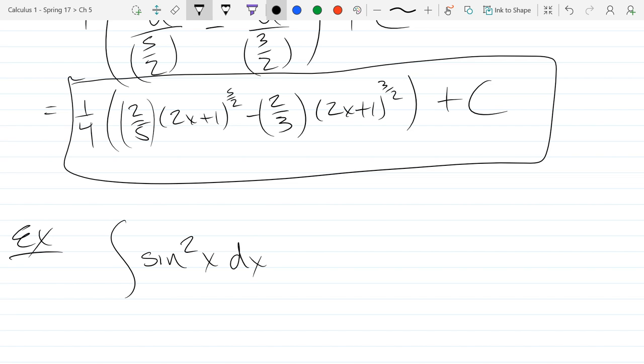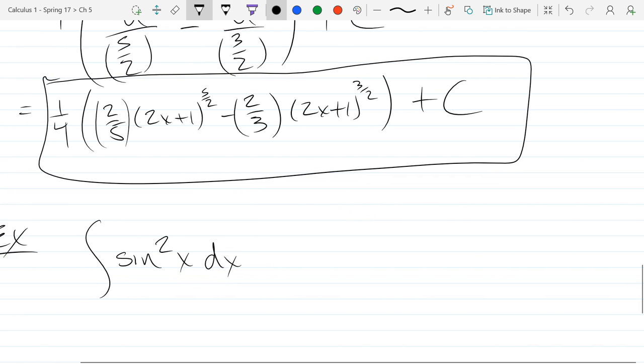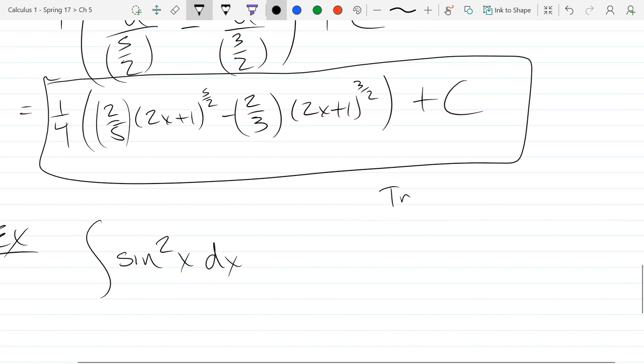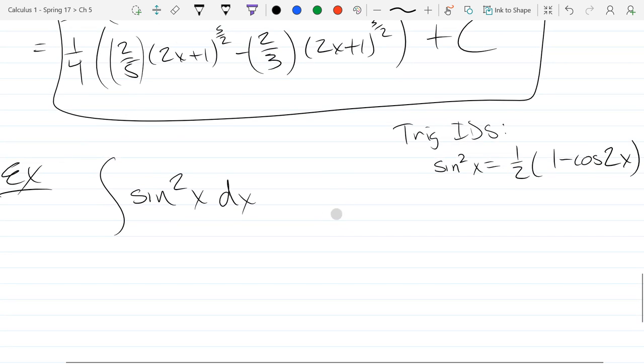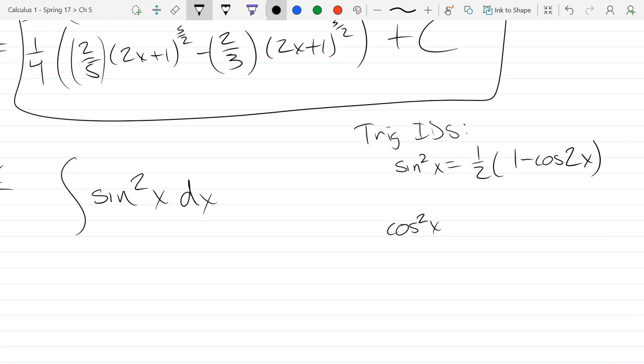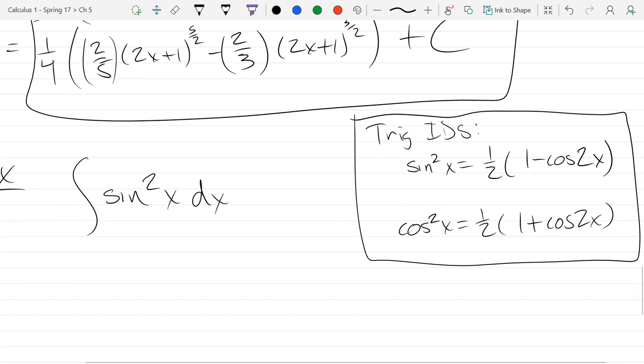So the calculus knowledge I have on sine is not terribly helpful. So again, we're going to use algebra, but we're going to use what we call trigonometry. So we have two identities that are useful. Sine squared is 1 half 1 minus cos 2x. And cos squared is 1 half 1 plus cos 2x. So I will write these on your last quiz and your final exam, so you don't have to memorize these.